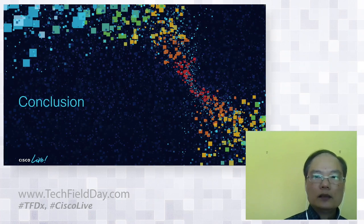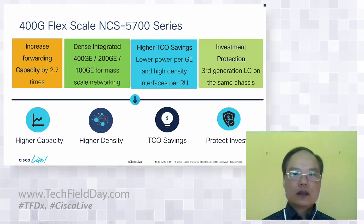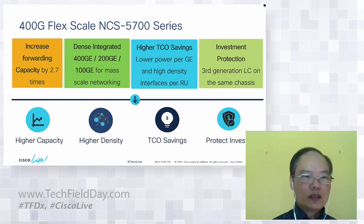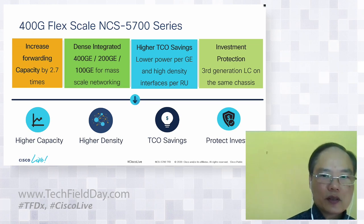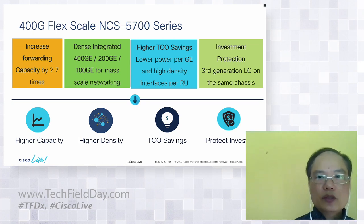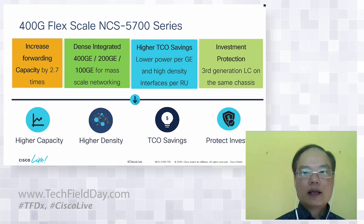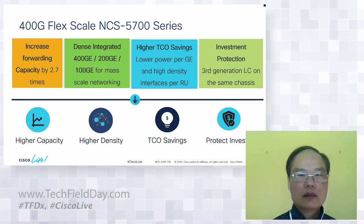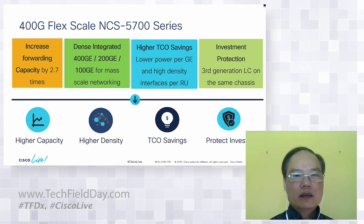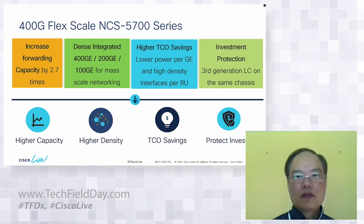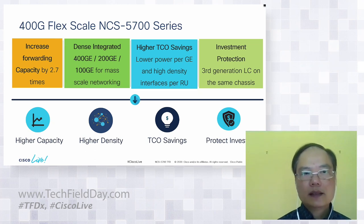We are coming to the end of our presentation. In conclusion, NCS 5700 provides higher capacity, higher density, and TCO savings with investment protection.